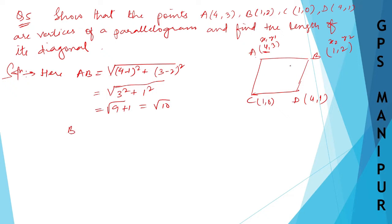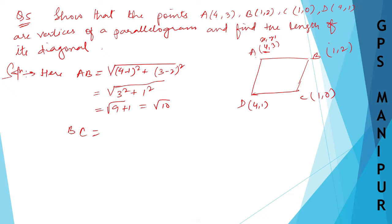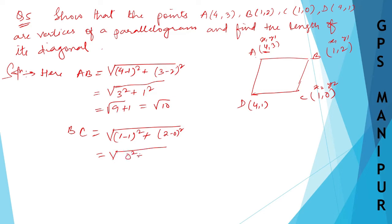Now let us find BC. B is (1,2) and C is (1,0). Taking B as (x1,y1) and C as (x2,y2), BC equals root over (1 minus 1) squared plus (2 minus 0) squared, which is root over 0 plus 4, and since root of 2 squared cancels, BC equals 2.